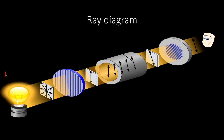Here is the light source. Here is a polarizer. Here is the sample well. Here is the detector. Here is the observer. These are the main components of the ORD instrument setup.